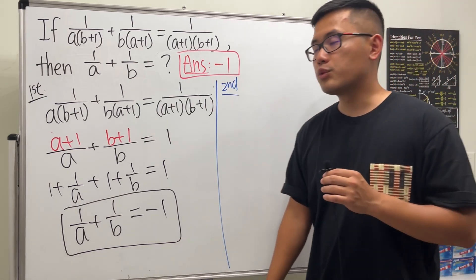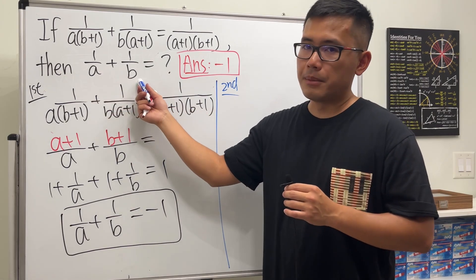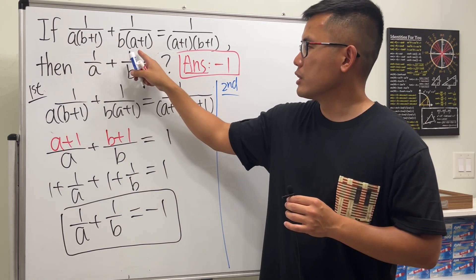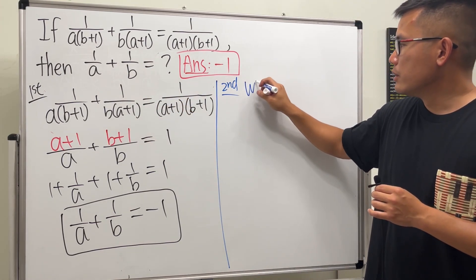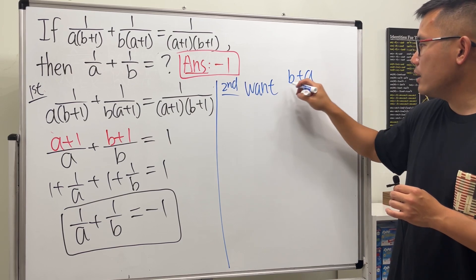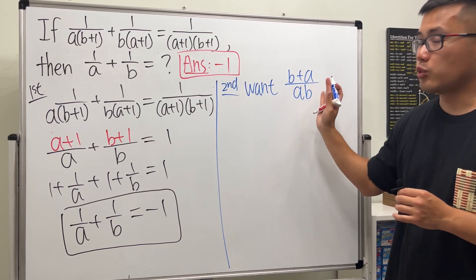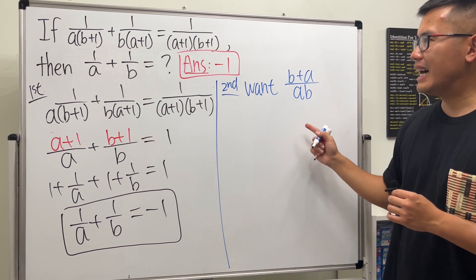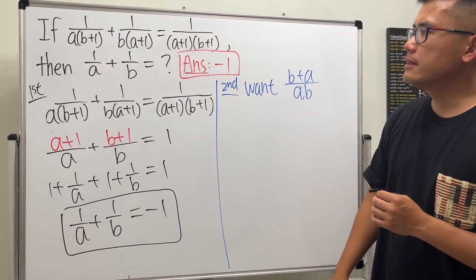For the second method, let's go ahead and combine the fractions. Multiply the first term by b/b and the second by a/a, so we're looking for (b+a)/(ab). Now we need to find out what b+a and ab are from the given equation.